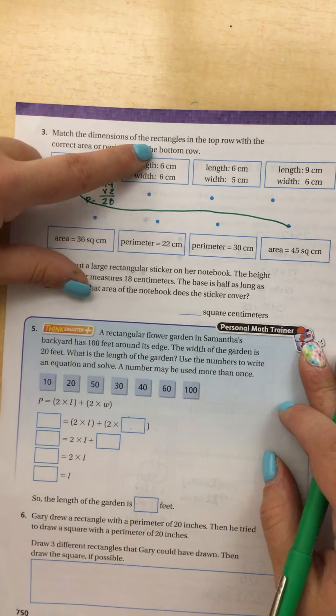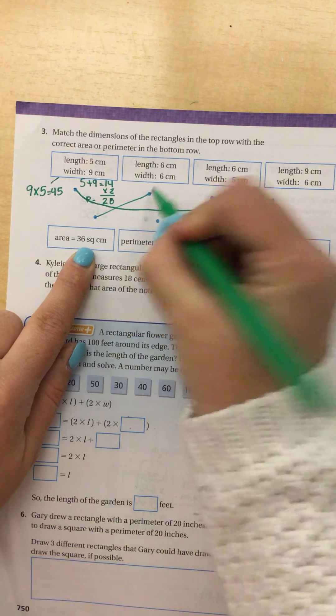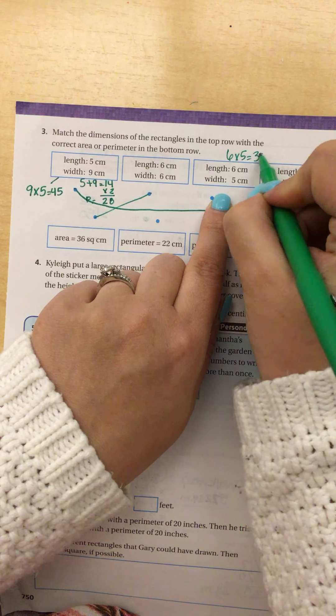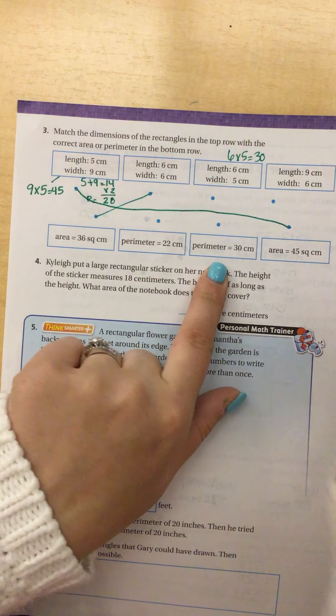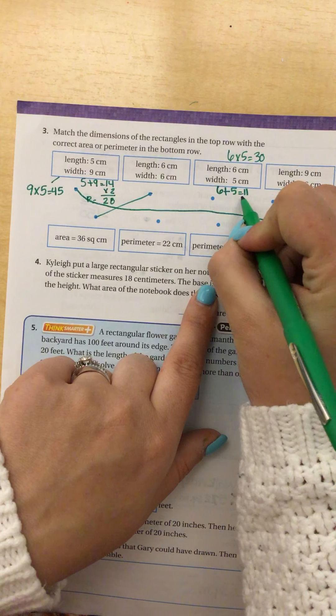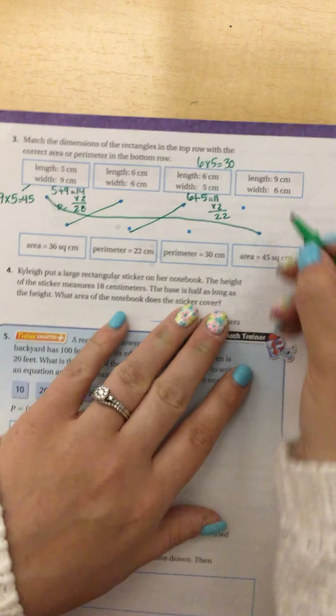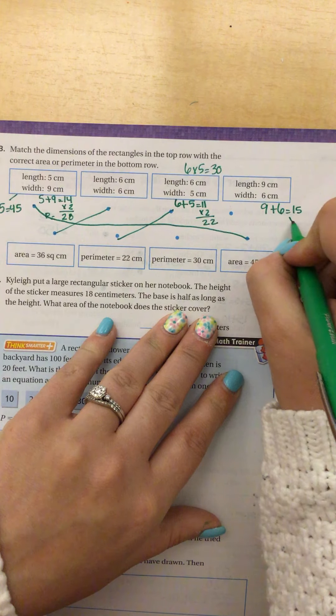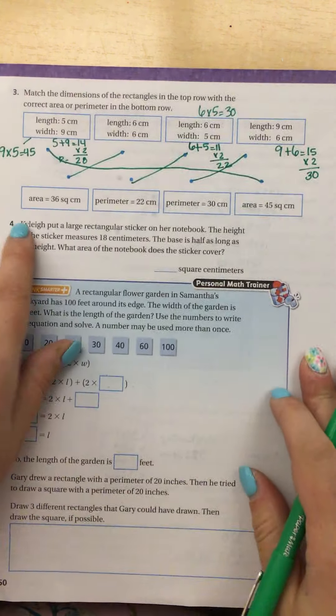Okay, doing area, 6 times 6 is 36. I do have 6 times 6 is 36, I can match that up. 6 times 5 is 30, that is not my area. And I can see that all I have left is perimeter. So if I add them, 6 plus 5 is 11, when I multiply that by 2, I get 22. There's my match. 9 plus 6 equals 15 times 2 is 30.